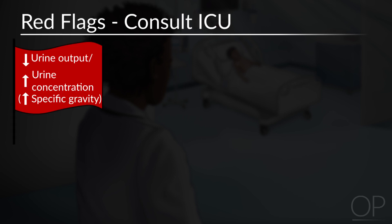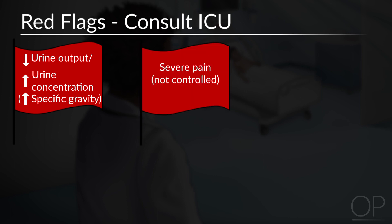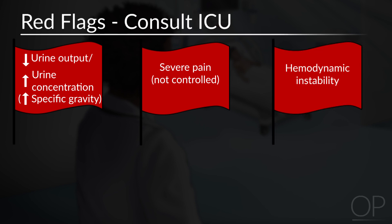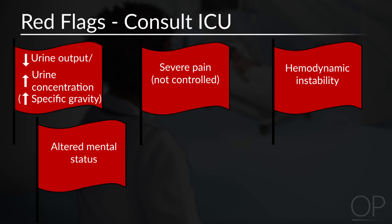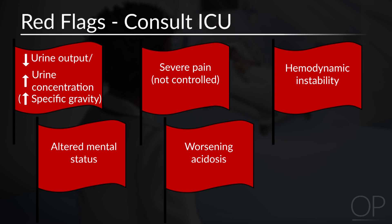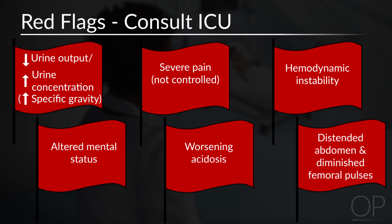If you notice that your patient has any of the following signs, these should be red flags that you may need to activate an ICU evaluation: diminished urine output or more concentrated urine such as an increasing specific gravity; severe pain that is not controlled; any evidence of hemodynamic instability — these patients may need more aggressive fluid resuscitation and eventually vasopressor support; altered mental status or worsening acidosis; or a distended abdomen with diminished femoral pulses, which increase concern for abdominal compartment syndrome and may also necessitate a surgical evaluation.